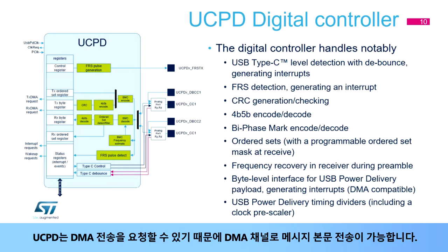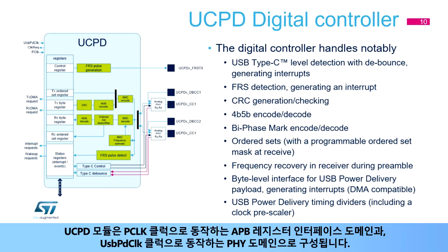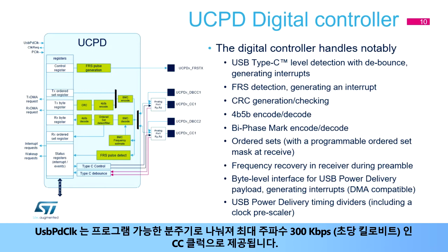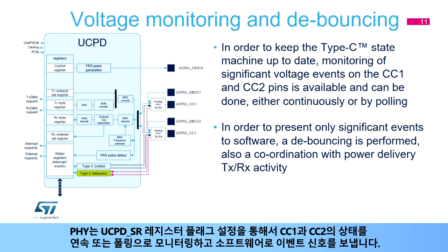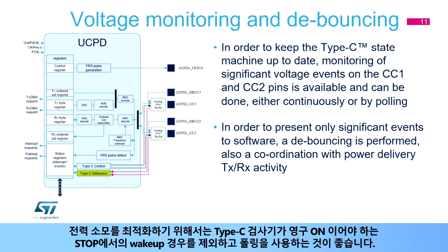The digital controller offers a byte-level interface for USB power delivery payload, generating interrupts. A DMA channel can assist the transfer of message payloads, as the UCPD unit is able to request DMA transfers. The UCPD module implements two clock domains: the APB register interface clocked by PClock, and the PHY clocked by USB PD clock. USB PD clock is divided by a programmable prescaler to provide the CC clock, whose maximum frequency is 300 kilobits per second. Due to bi-phased mark coding, two transitions may occur per transmitted bit, so the actual maximum clock frequency is 600 kilohertz. The PHY monitors the state of CC1 and CC2, either continuously or by polling, to detect and signal events to software by setting flags in the UCPD-SR register. To optimize power consumption, it is recommended to use polling, because Type-C detectors are off between polls, rather than wake up from stop, which requires Type-C detectors permanently on.